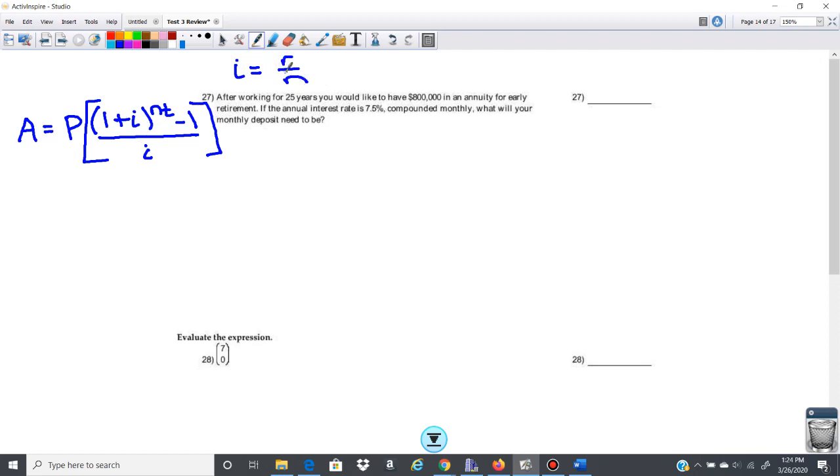So if I'm plugging all of this in, let's get our i first. So i is going to be 0.075 is our rate, and we are compounded. We're going to take the 7.5% divide by 100, that gives us the 0.075.